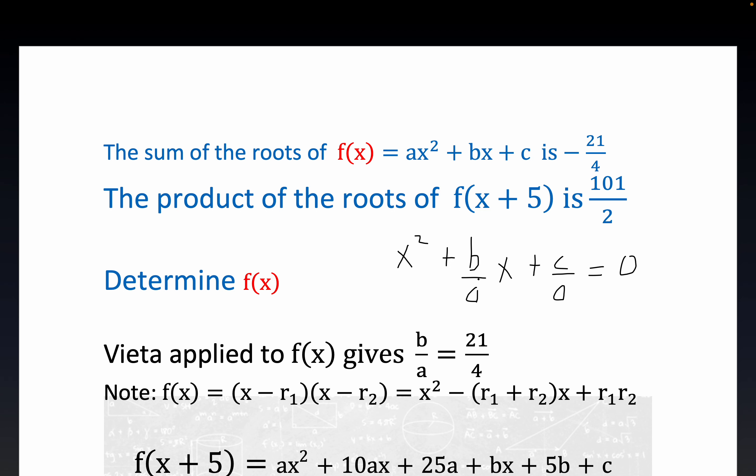We got B over A is the coefficient of X, and then C over A ends up being the product of the zeros.